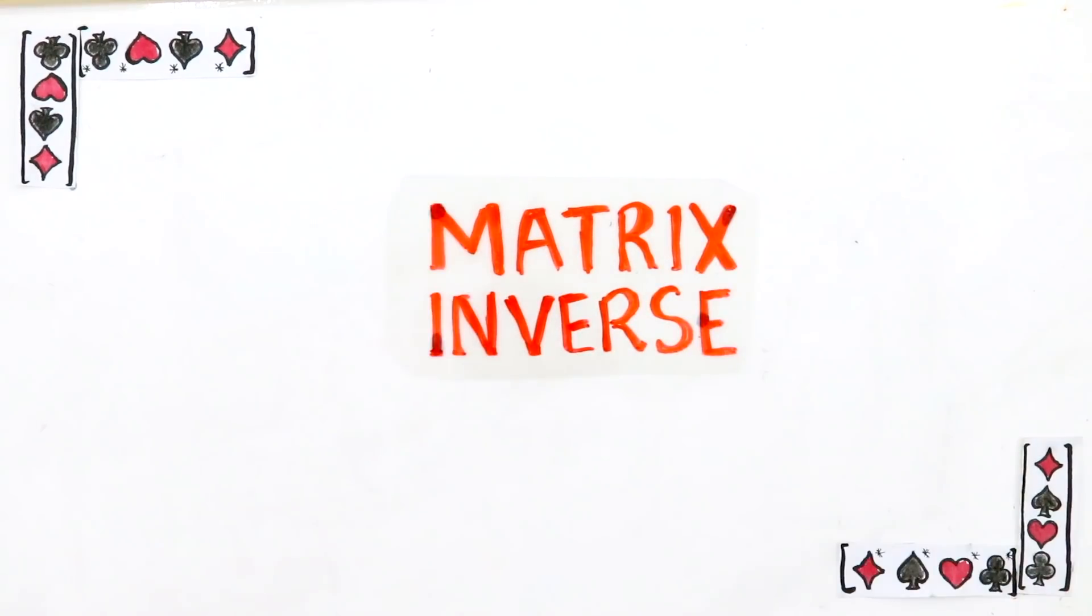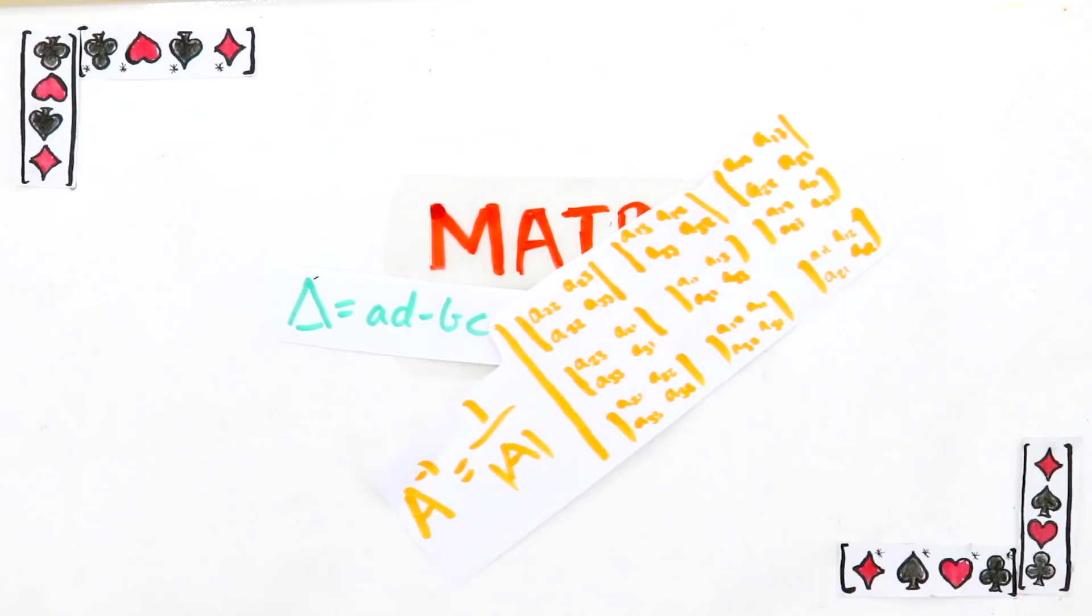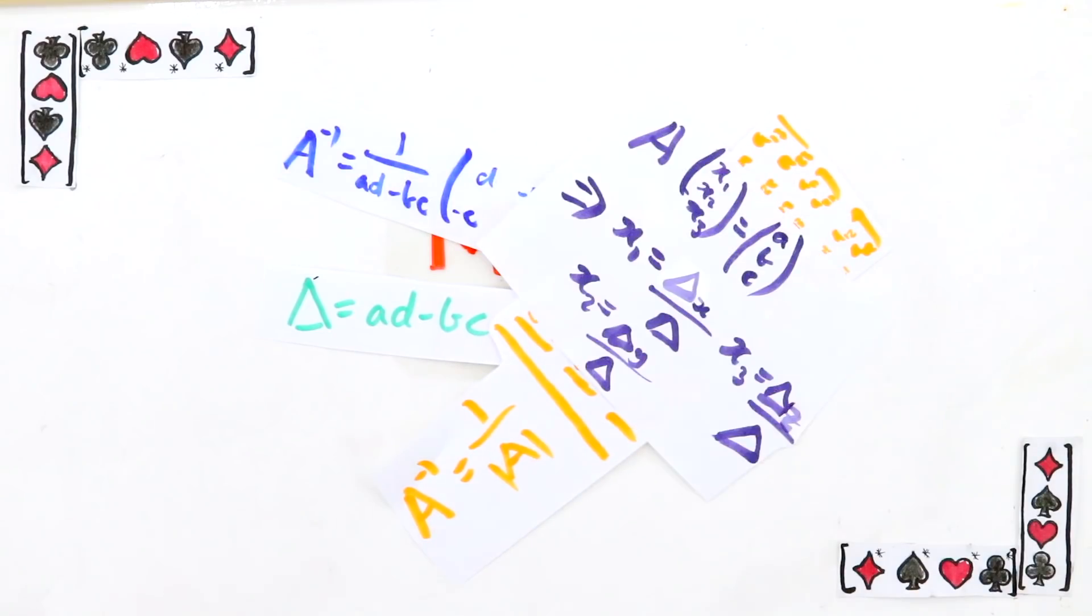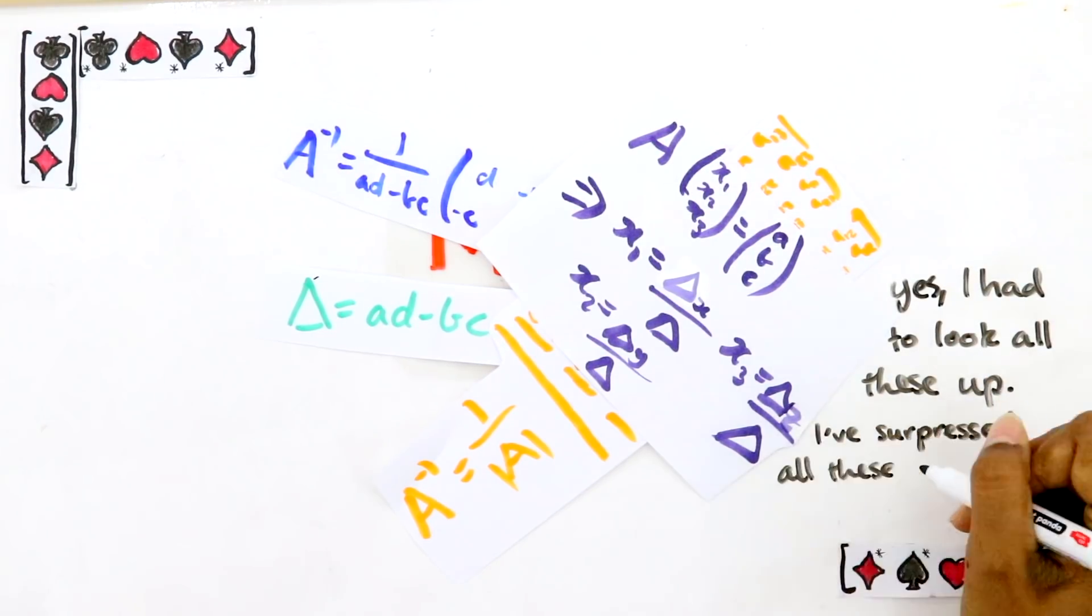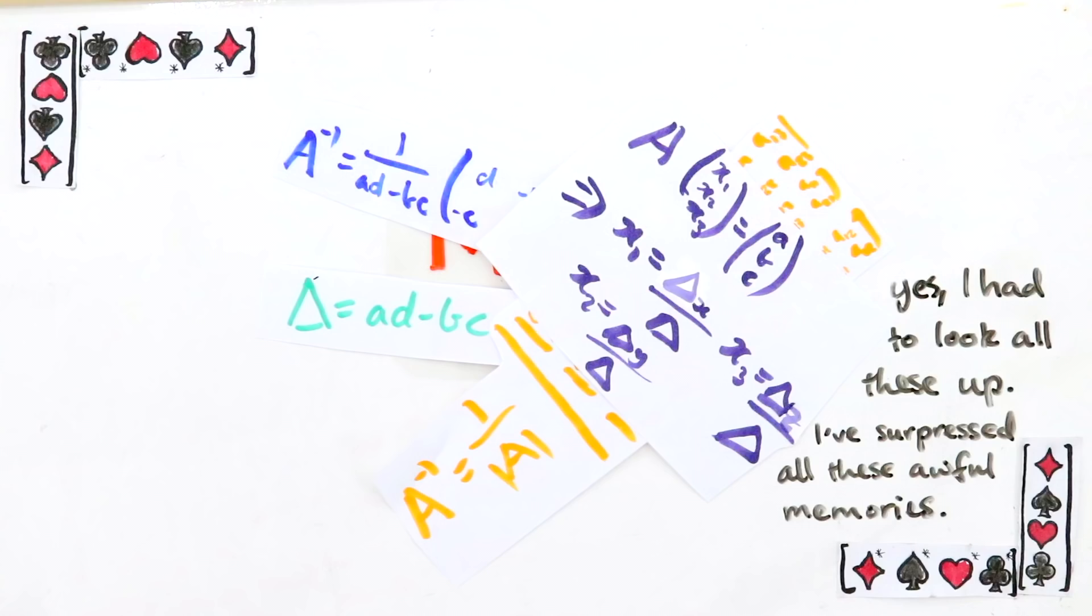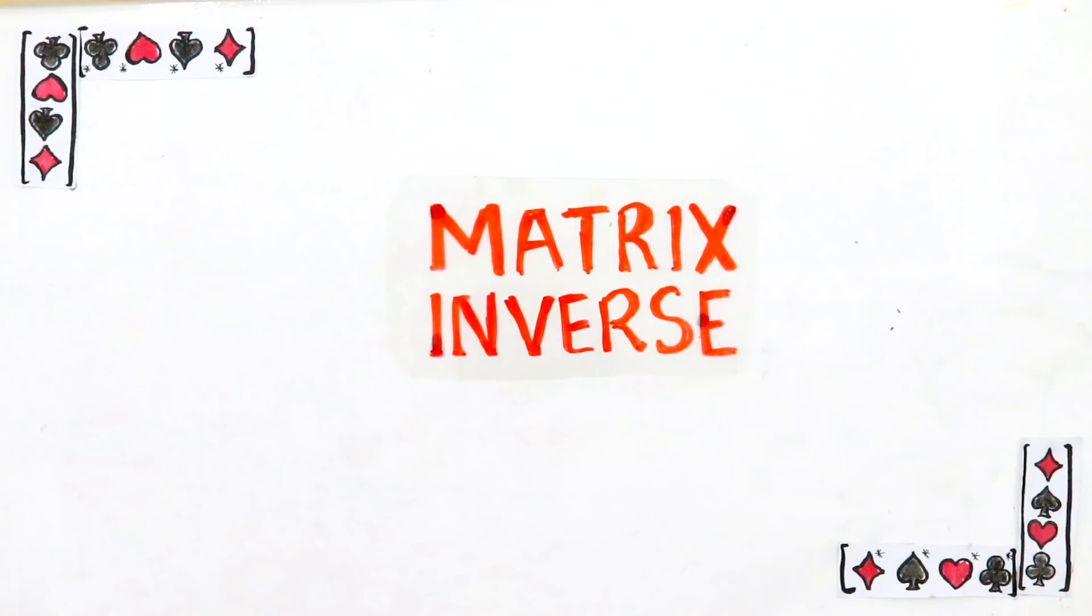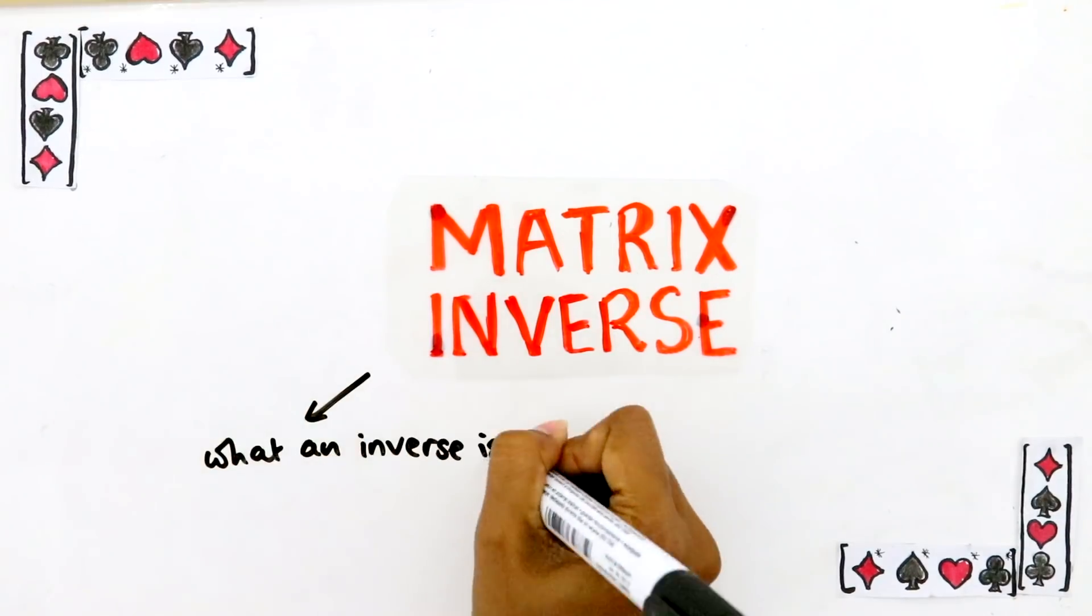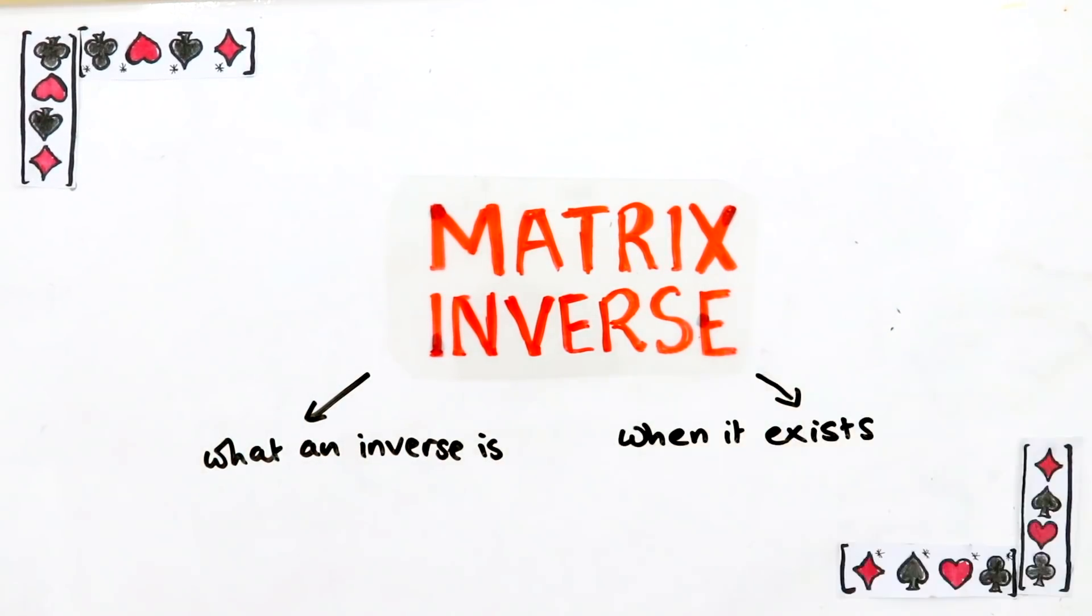In a linear algebra course, matrix inverses are something that get a lot of attention. There are all these formulas thrown at you like for the determinant, the inverse of two by two matrices, Cramer's rule, etc. These formulas are great but I think that they can obscure the very simple idea behind what an inverse actually is and when it exists.